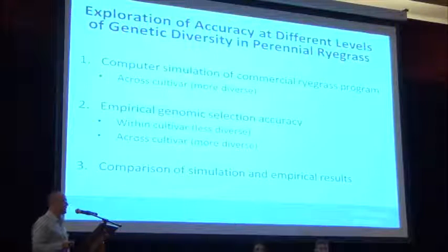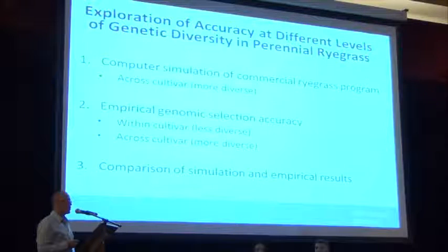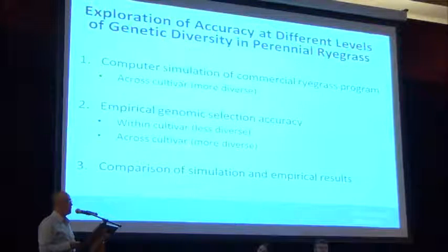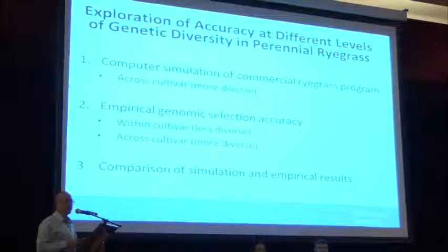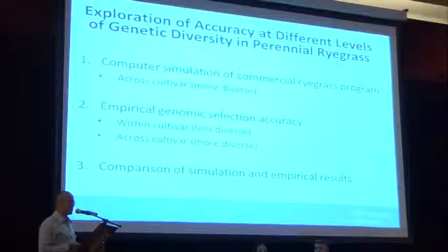There are three things I'm going to discuss in terms of results today. The first is a computer simulation of a commercial ryegrass breeding program where we simulated a cross-cultivar strategy. Then I have two examples of empirical genomic selection accuracies — one within cultivar and one across cultivars. Finally, I'll try to match up the simulation and empirical results.